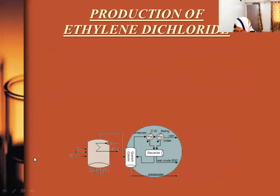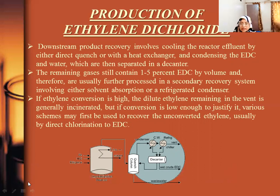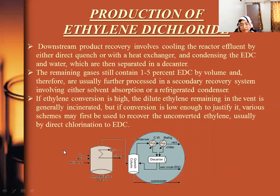In the air technique, downstream product recovery involves cooling the reactor effluent by either direct quench or with a heat exchanger, and condensing the ethylene dichloride and water. The remaining gases still contain one to five percent ethylene dichloride by volume and are usually further processed in a secondary recovery system involving either solvent absorption or refrigeration condensation. If ethylene conversion is high, the dilute ethylene remaining in the vent is generally incinerated, but if conversion is low enough, various schemes may be used to recover unconverted ethylene, usually by direct chlorination.